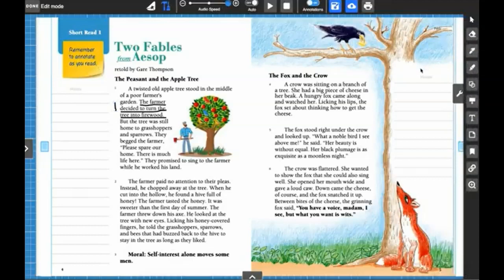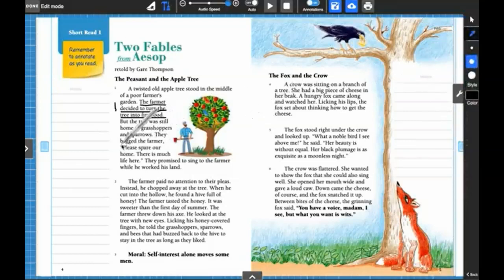All right, the second half of the paragraph describes animals living in the tree and what they say to the farmer. The key event or action told here is that the animals begged the farmer to please spare our home. They are pleading with him to spare their home, so that's a key event because it's going to affect what happens next. So I'm going to put a two next to this as this is my second key event.